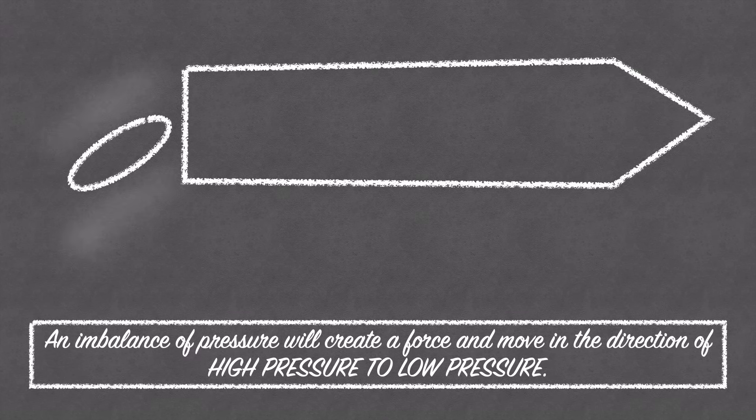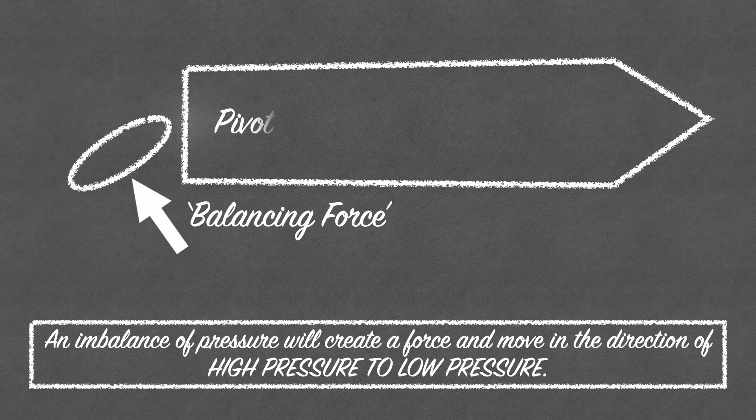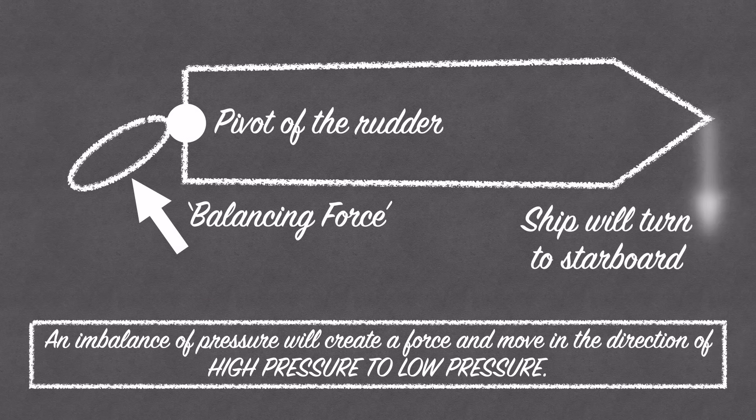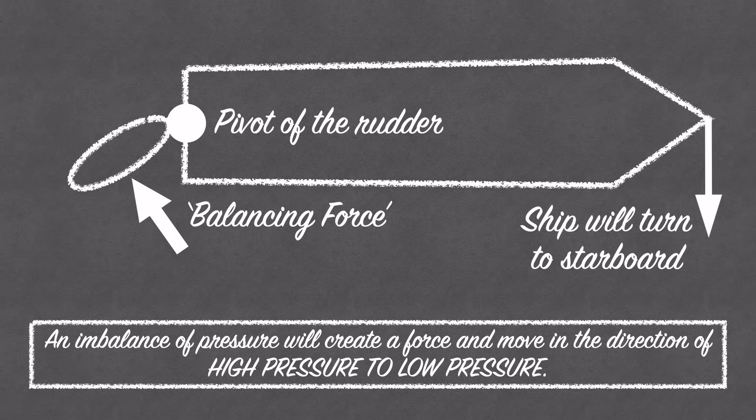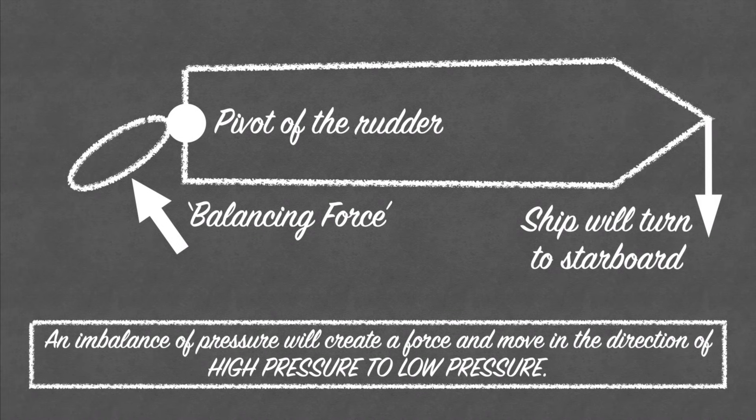The force created, which we will call the balancing force, pushes on the side blocking the flow of water, just like holding your hand out of a moving car's window. As the rudder is fixed to the ship and won't move, the only thing that can change to balance the pressure is for the ship itself to move, and in this case it will turn to starboard.